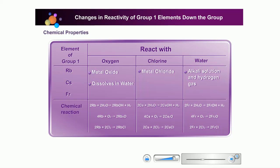Rubidium, cesium, and francium react with oxygen to form a metallic oxide which dissolves in water to produce an alkali.